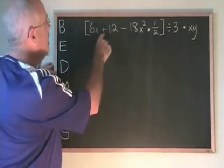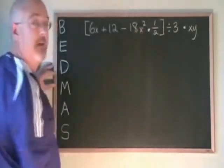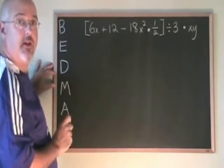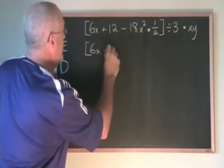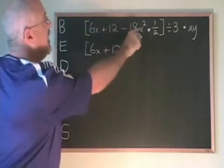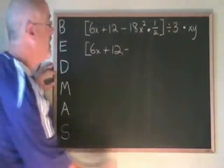Inside the bracket, we have addition, subtraction, multiplication. Multiplication has to be done first. 18x squared times a half is 9x squared.